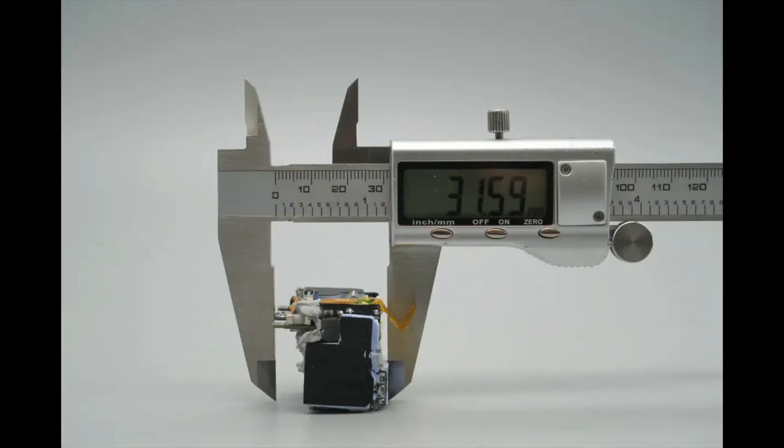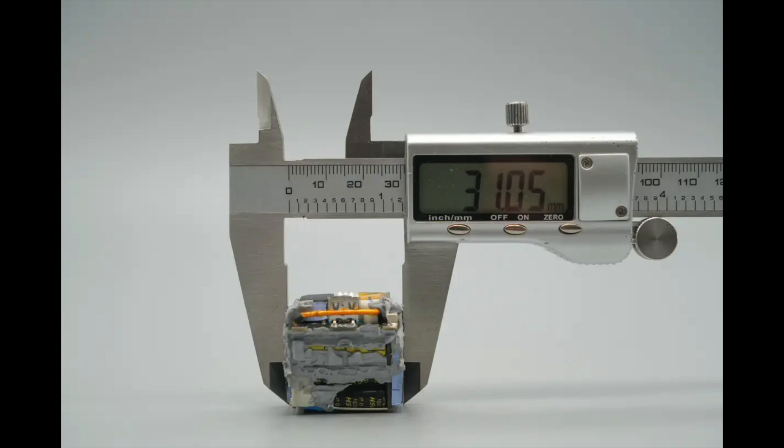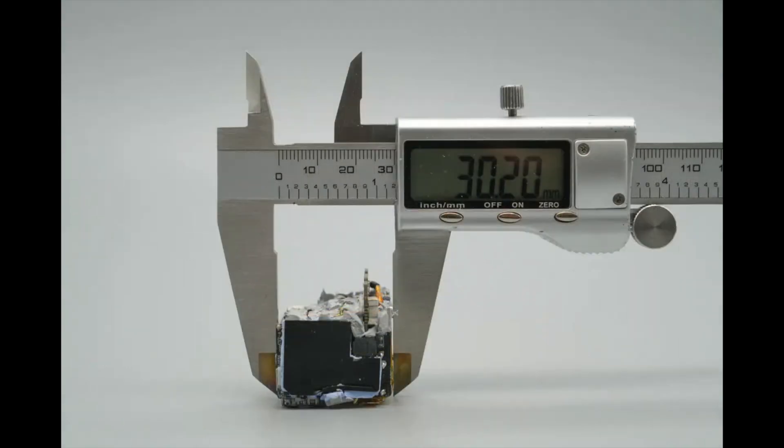The length of the PCBA module is about 31.59 millimeters, 1.24 inches. The width is about 31.05 millimeters, 1.22 inches. The thickness is about 30.2 millimeters, 1.19 inches.